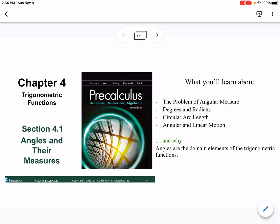So this is section 4-1, which is angles and their measures. We're going to talk about the problem of angular measure, degrees and radians, circular arc length, and angular and linear motion.